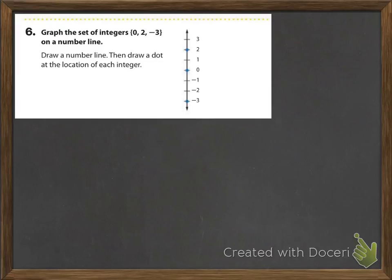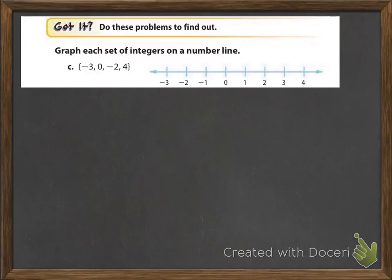Now we're going to graph the set of integers 0, 2, and negative 3 on a number line. Notice this number line is going to be vertical, like the blinds that go to your patio. First we're going to graph the 0, then the number 2 — notice that's a positive 2 so it's going to be up top — and then negative 3, which is going to be at the bottom. Go ahead and do the two problems on your own. To graph negative 3, go behind 0 to the left and graph the dot on negative 3. Zero is plotted here, negative 2 is graphed here, and positive 4 is graphed here. Check your work and make sure you got them all correct.